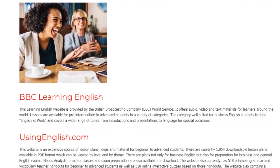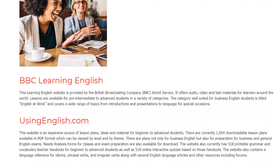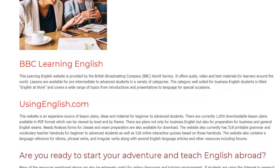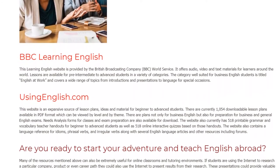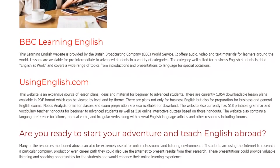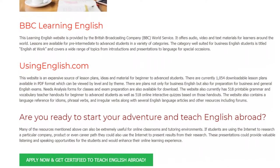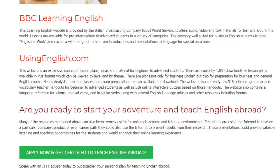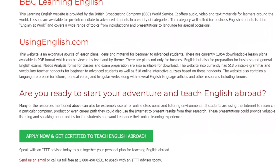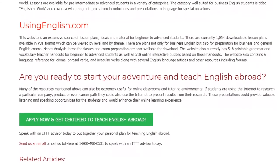UsingEnglish.com — This website is an expansive source of lesson plans, ideas, and material for beginner-to-advanced students. There are currently 1,054 downloadable lesson plans available in PDF format, viewable by level and by theme. There are plans not only for business English but also for preparation for business and general English exams. Needs analysis forms for classes and exam preparation are also available for download. The website also currently has 518 printable grammar and vocabulary teacher handouts and 518 online interactive quizzes based on those handouts, plus a language reference for idioms, phrasal verbs, and irregular verbs, along with several English language articles and other resources including forums.